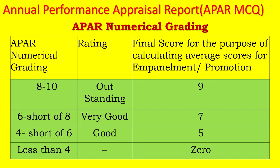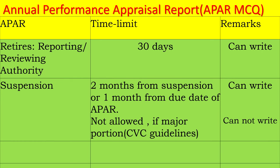For LDCE promotions it is 4 and for MACPs it is 6. Regarding time limits: the reporting officer has a time limit of 30 days within which he has to submit the annual reports of his subordinates. Whenever an official is placed under suspension and he happens to be a reporting or reviewing authority, the APAR should be written within two months from suspension or one month from the due date of APAR, whichever is later.